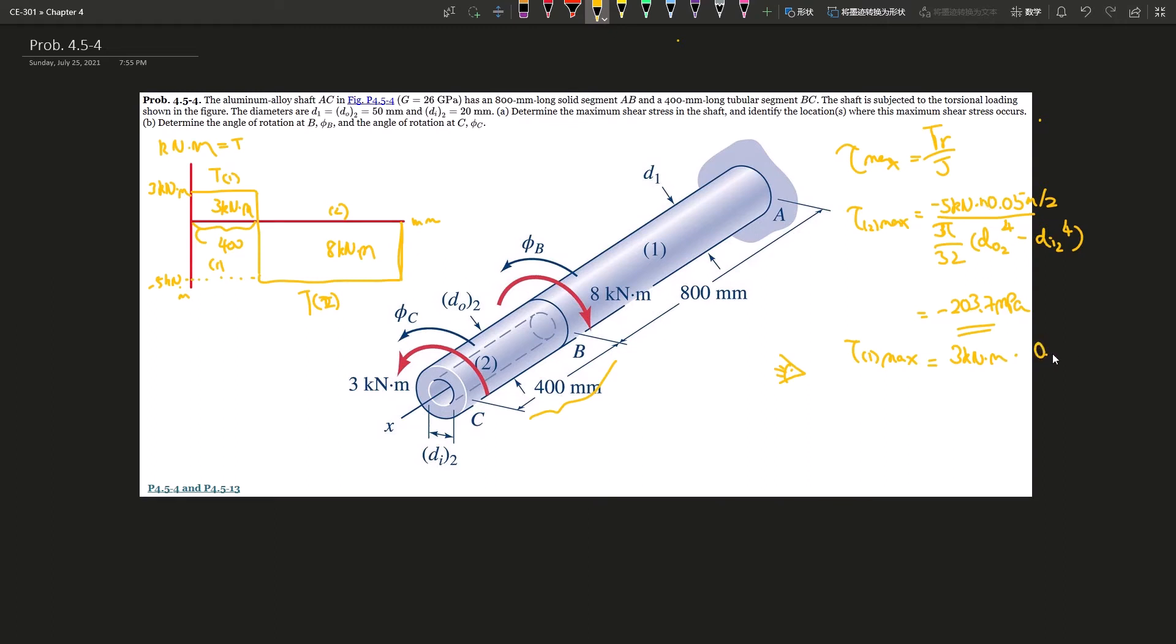Times 0.05 meter divided by 2, over pi over 32 times 0.05 to the power of 4. Hit all this into your calculator, you are going to get 50 point, okay, I'm so sorry. I think I wrote the other way around, so this is 203.7 megapascal, and this is negative 50.2 megapascal. Determine the maximum shear in the shaft and identify the location, so it's pretty easy.